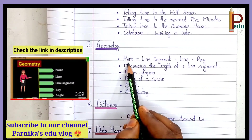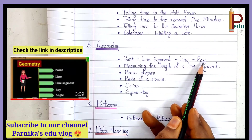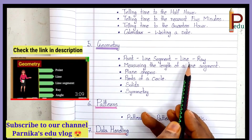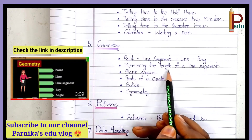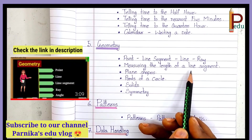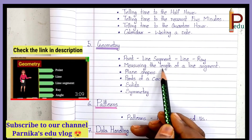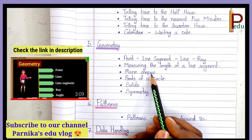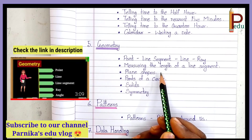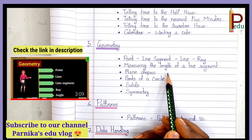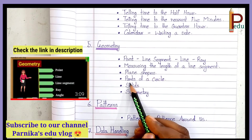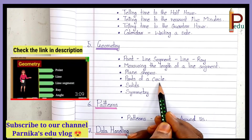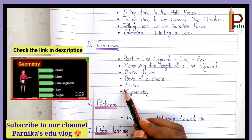Fifth chapter is Geometry. Point, Line Segment, Line, and Ray — using figures, we will learn what a point, line segment, line, and ray are. Next, Measuring the Length of a Line Segment — using a scale to measure the length of a line segment. Next, Plane Shapes — shapes that can be drawn on a plane surface, like Rectangle, Circle, Triangle. Next, Parts of a Circle — a circle has a center and radius, and we learn how to draw a circle using a compass.